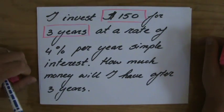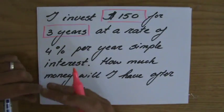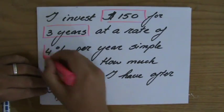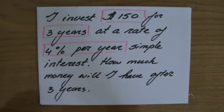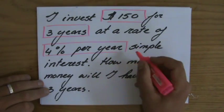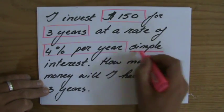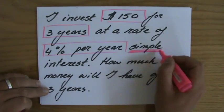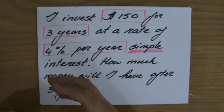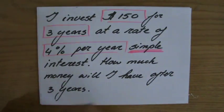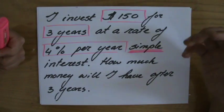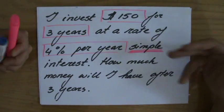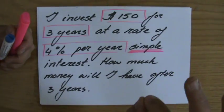And how much interest do I get? I get 4% per year. In the question, the word 'simple' will be printed in bold to distinguish between simple and compound interest, because those are two different types of interest. It's very important - we're talking about simple interest.